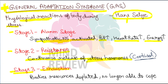In the Resistance stage, continuously aapki body stress hormones release karti rehti hai. What are these stress hormones? These are cortisol and other hormones, but the major one is cortisol. Aapki body continuously usi state mein hai ki heart rate increased hai, energy increased hai — aapki body koshish karti hai stressful event se fight karne ki, aur for that it is continuously releasing these stress hormones.